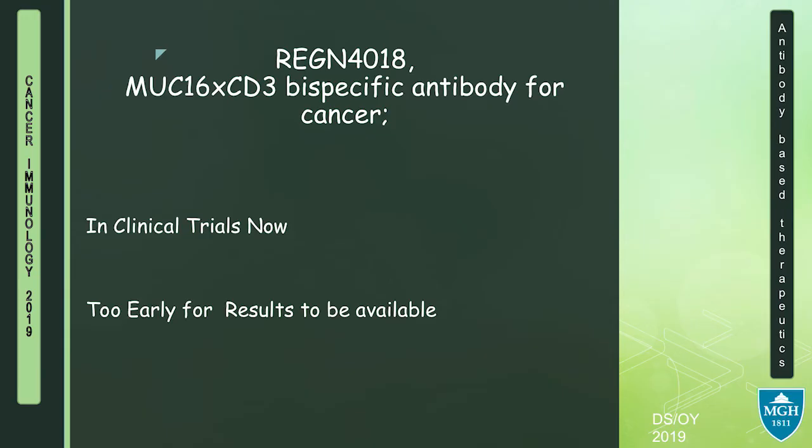Our most advanced bispecific engager is REGN4018, a product made by Regeneron. It is a MUC16 and CD3 binding molecule currently only in clinical trials — not available for wide use — and the results are still too early to tell.